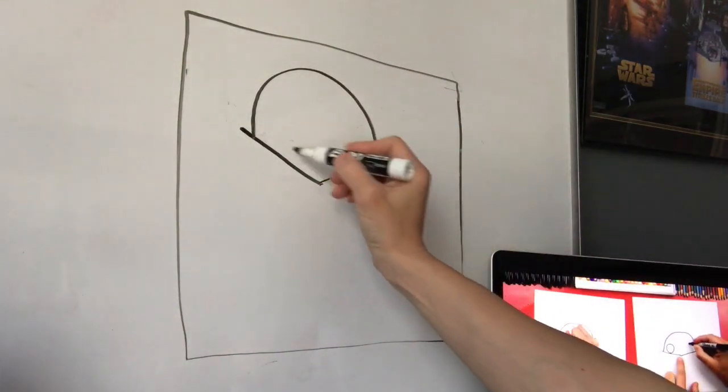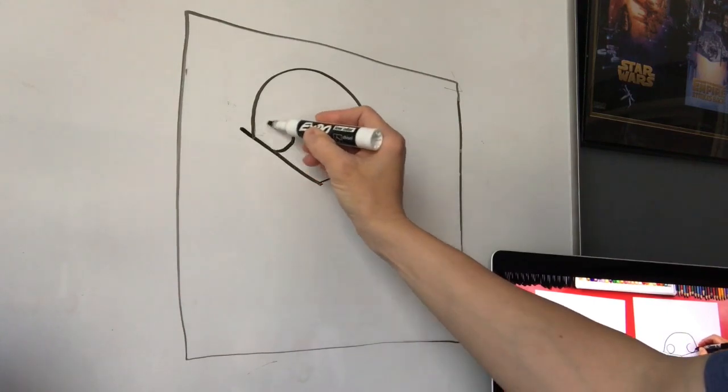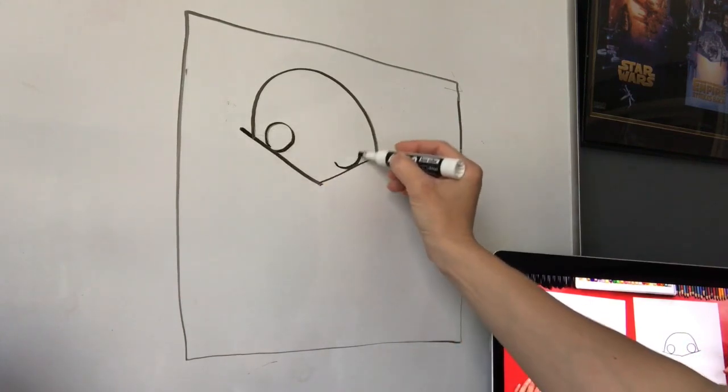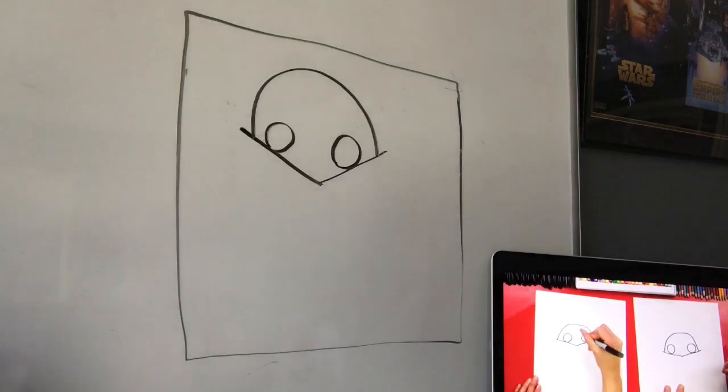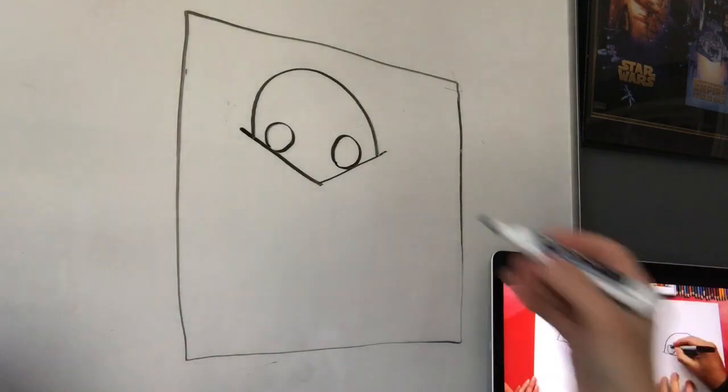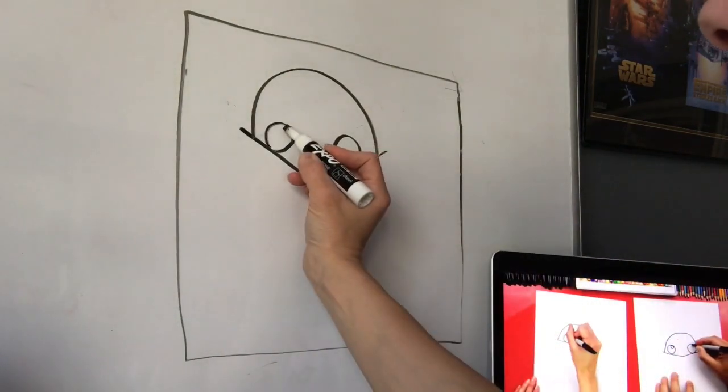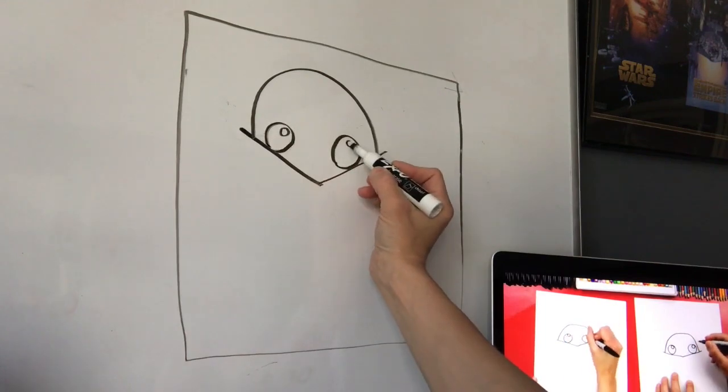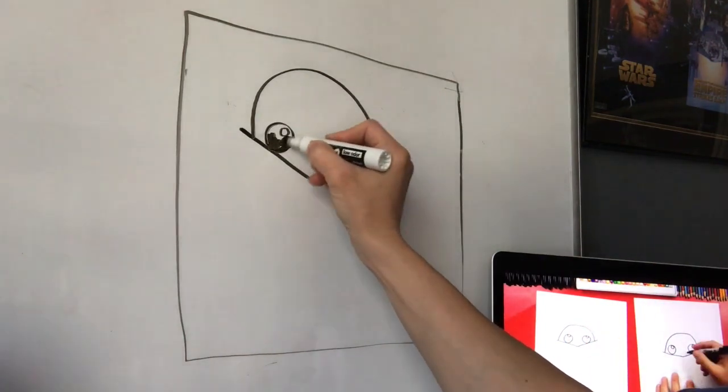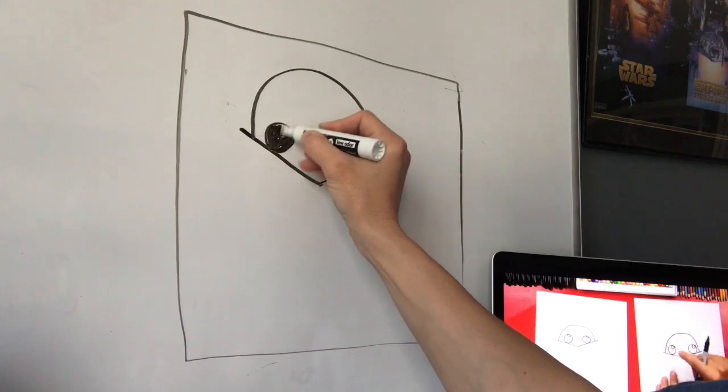Then we're gonna make eyes down here by the V shape. So two big circles. Then we're gonna make little tiny circles inside the big circles. And then we're gonna color in the big circles. We're gonna leave those little circles white.